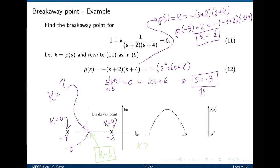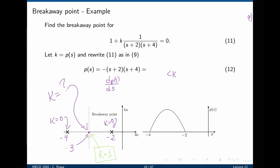When k is greater than 1, the poles become complex conjugate poles and the system goes from being overdamped to underdamped. For k greater than 0 and less than 1, we have an overdamped system with real poles. At k = 1, we have a critically damped system with two poles at the same location at -3. When k is greater than 1, the system becomes underdamped.